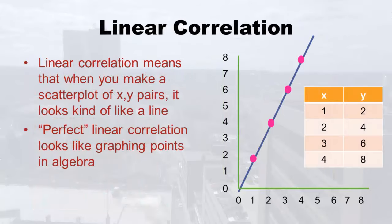Because we did that, I can talk about linear correlation and you'll get it. Linear correlation means that when you make a scatterplot of x, y pairs, it kind of looks like a line. Over on the right is algebra — not statistics — where you'd have these perfect lines with the dot right on the line. Perfect linear correlation looks like graphing points in algebra.